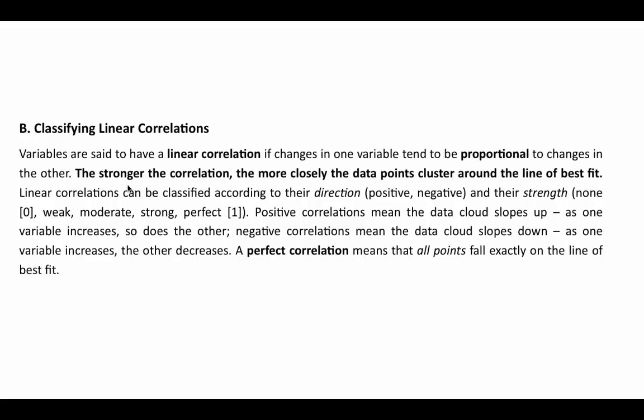A positive correlation means the data cloud slopes upward — as one variable increases, so does the other. A negative correlation means the data cloud slopes downward — as one variable increases, the other decreases. The value goes from negative one — a perfect negative correlation where the line slopes down — to positive one — a perfect positive correlation where the line slopes up. In terms of absolute value, the range is zero to one.